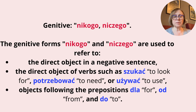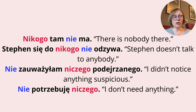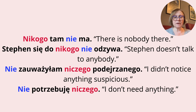Nikogo tam nie ma. — There is nobody there. Steven się do nikogo nie odzywa. — Steven doesn't talk to anybody. Nie zauważyłam niczego podejrzanego. — I didn't notice anything suspicious. Nie potrzebuję niczego. — I don't need anything.